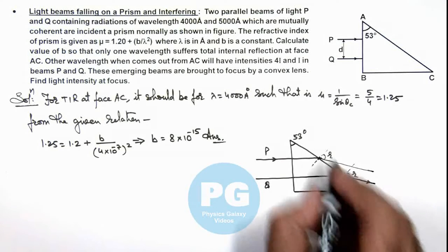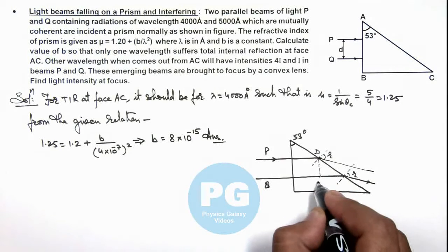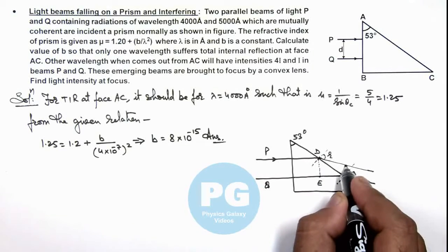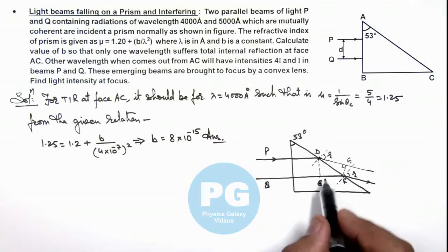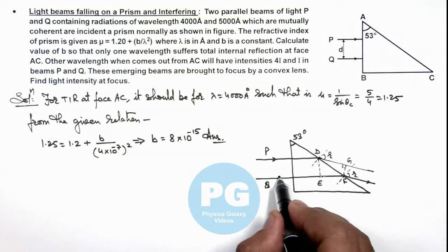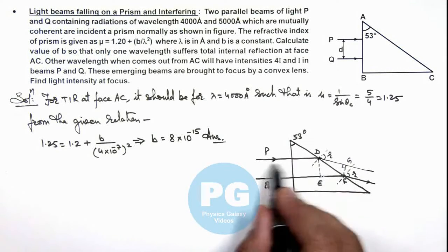So if this point we consider as D, we drop a perpendicular, this point we consider as E, this is F, and from here we drop a perpendicular and say this is G. So this EF is the excess path travelled by the light beam Q in the prism, and DG is the path travelled by beam P in air.